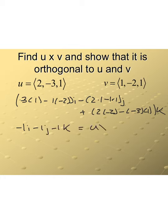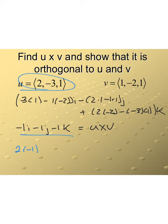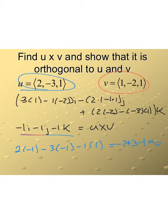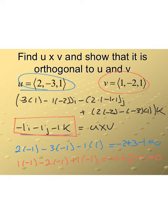Now we'll take the dot product of our cross product with each original vector to verify we get 0. Dotting u with the cross product: 2·(−1) + (−3)·(−1) + (−1)·1 = −2 + 3 − 1 = 0. Dotting v with the cross product: 1·(−1) + (−2)·(−1) + 1·(−1) = −1 + 2 − 1 = 0. Both dot products equal 0, confirming orthogonality.